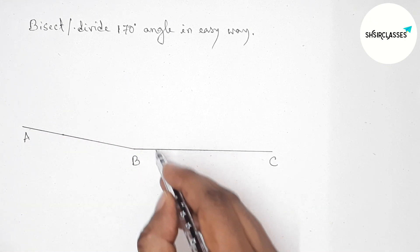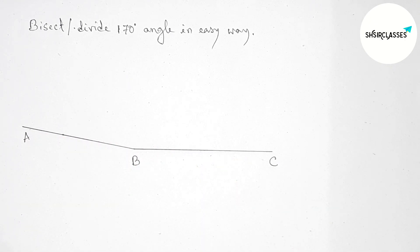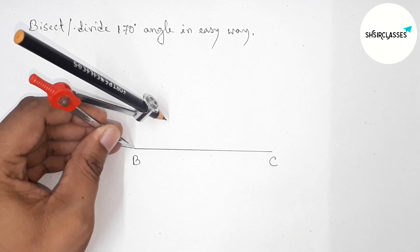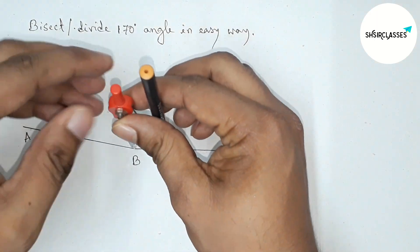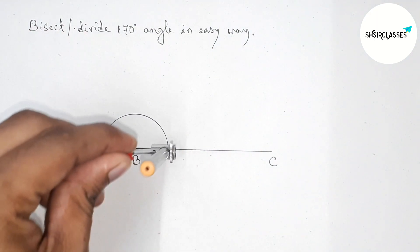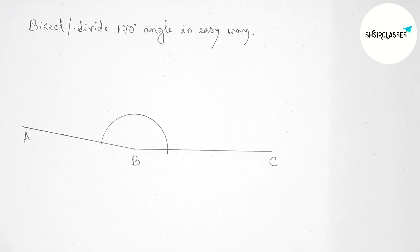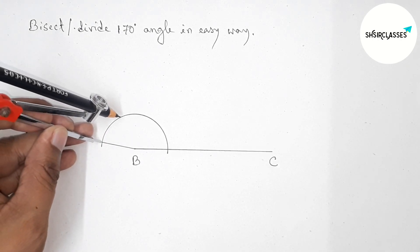Angle ABC is 170 degrees. Next, bisecting this angle with the help of a compass. Putting the compass on point B and taking any length, drawing an arc this way. Now putting the compass here.